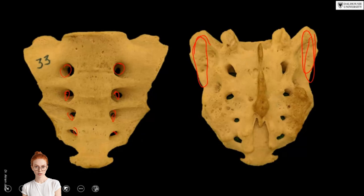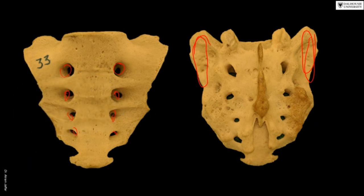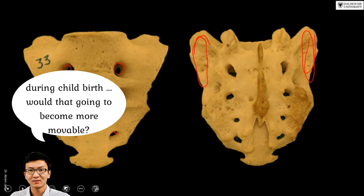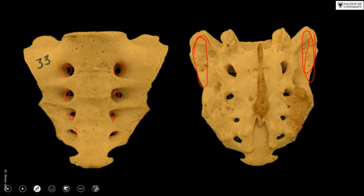What type of joint is the sacroiliac joint? It is a synovial joint, but the unusual thing about it is that there is not much movement taking place at this joint. These joints in general will become more mobile during pregnancy, but not to the extent of mobility of the shoulder, hip, or knee joint.